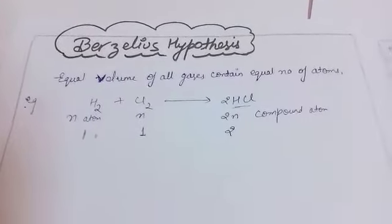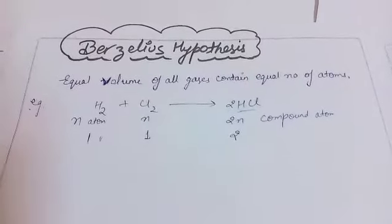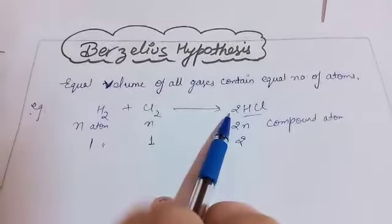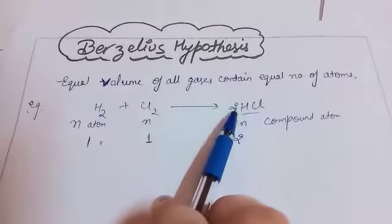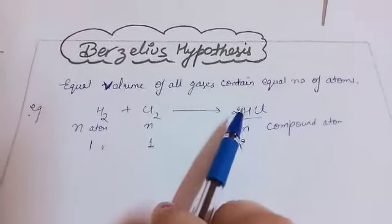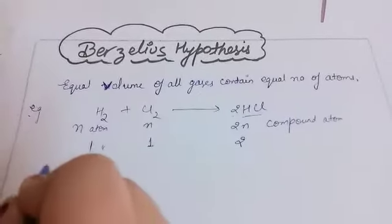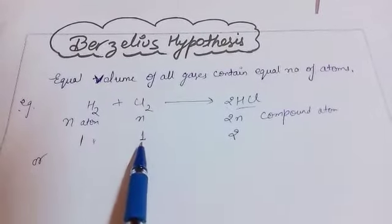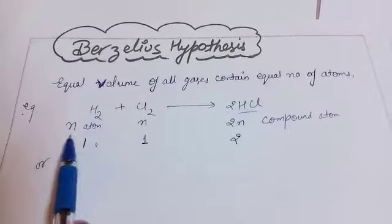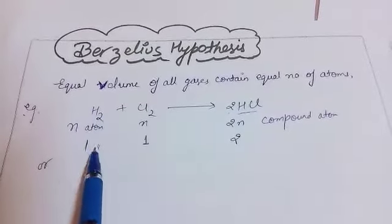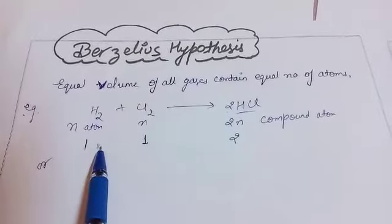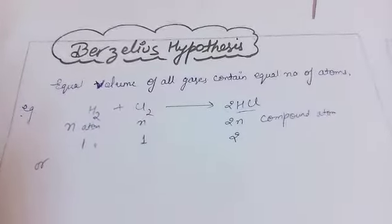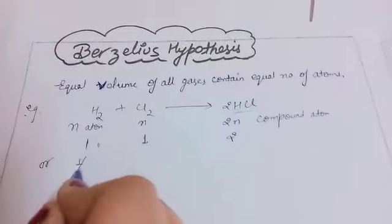Now if equal volume of all gases contain equal number of atoms, and the volumes are in ratio 1 : 1 : 2, then the number of atoms must also be in ratio 1 : 1 : 2. The volume of HCl produced is 2, but the reactant volumes are each 1. If volume equals number of atoms, and we need one atom per unit volume, then for H₂ with volume 1 we get one atom — but that means each hydrogen is half an atom.